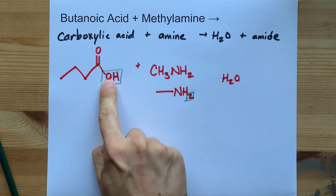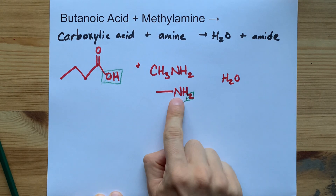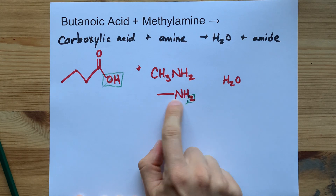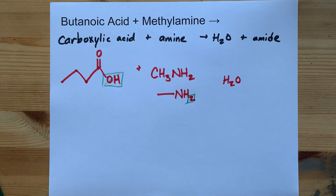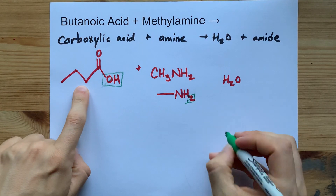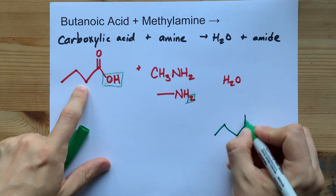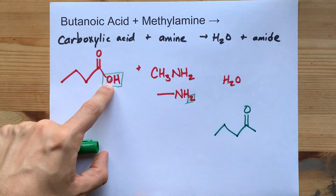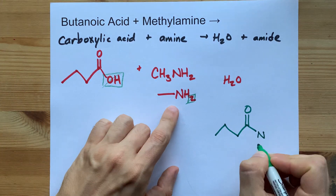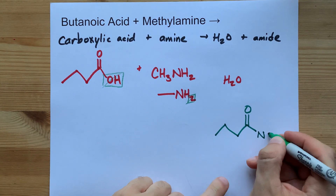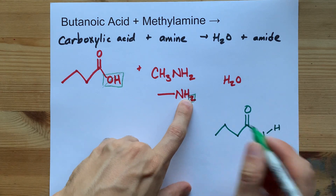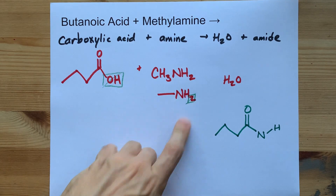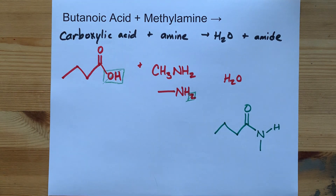Instead of this single bonded O being attached to that carbon, you're going to connect it to the N instead. That N is still connected to an H and to the CH3 group. We still have our 4-carbon long chain with the double bonded O, but the OH left in the water. You're now connected to the N of the amine, which still had one H remaining — it brought two and only one got used to make H2O — and you have this CH3 group.